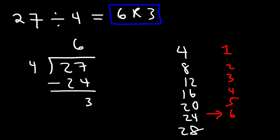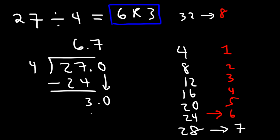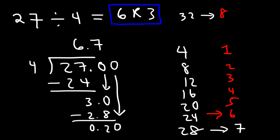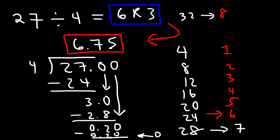Now let's write the answer as a decimal. Add a decimal point — how many times does 4 go into 3? 4 goes into 3 zero times, so we treat the 3 as 30. 4 goes into 30 seven times; 4 times 7 is 28, so 4 times 0.7 is 2.8. 30 minus 28 is 2, so bring down a 0. How many times does 4 go into 20? 4 goes into 20 five times, giving a remainder of 0. So our final answer as a decimal is 6.75.